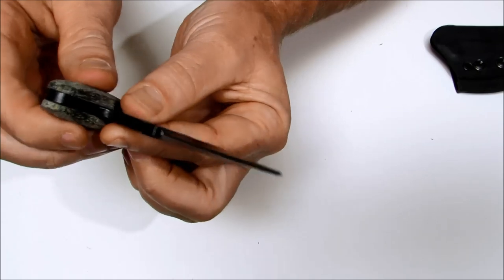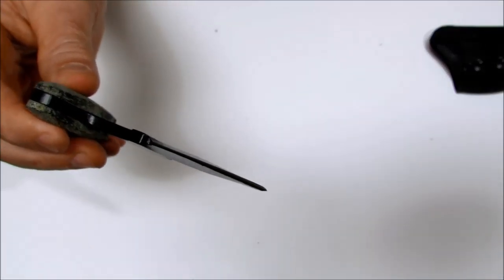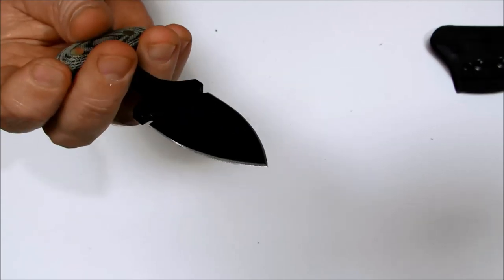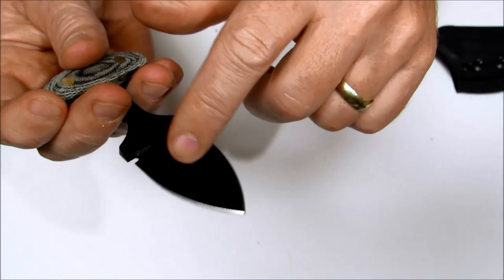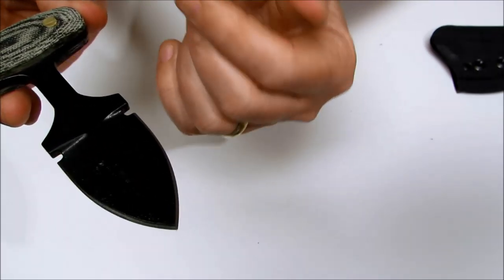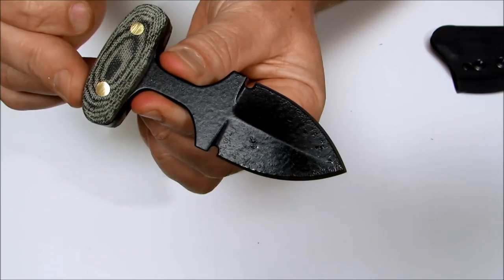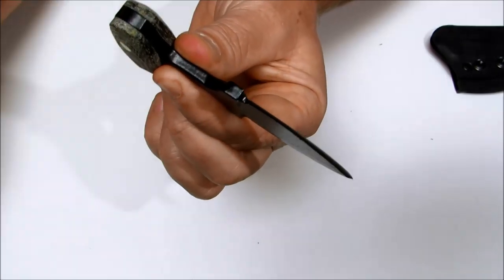The hardness of the 1095 HC is 57 HRC. It's a double-edged dagger, hollow ground, plain edge. Handle length 2 inches. The handle thickness 0.65.